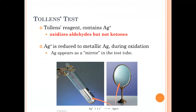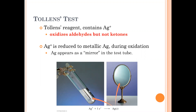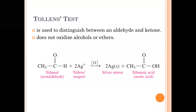One way to distinguish between an aldehyde and a ketone is Tollens' test. Tollens' reagent contains silver and will oxidize aldehydes but not ketones. If you add Tollens' reagent to an unknown solution and it is an aldehyde, the silver comes out of solution — you'll actually see a silver mirror form in the test tube. Tollens' test also will not oxidize alkanes or ethers, making it a very distinguishable test.